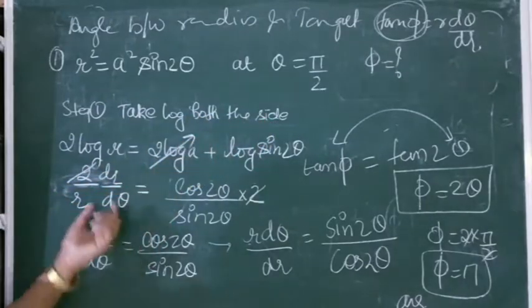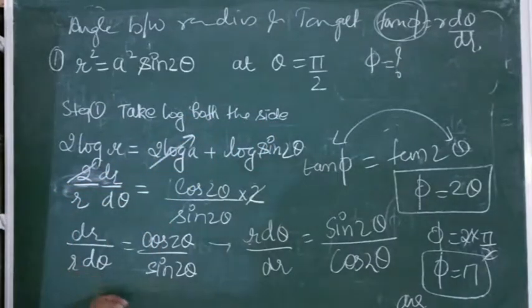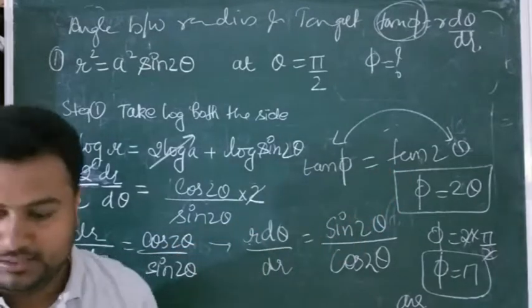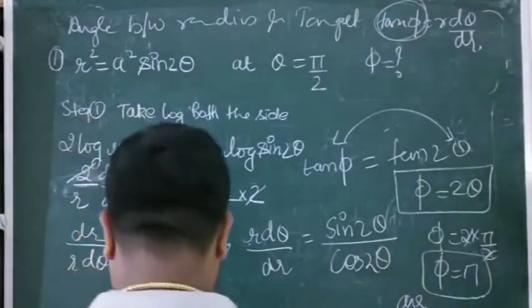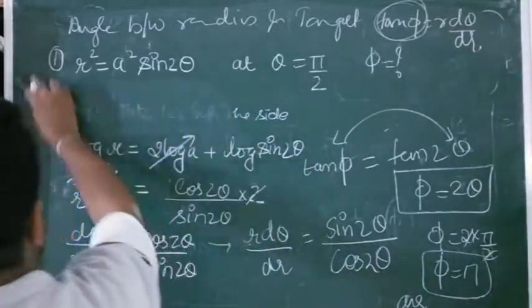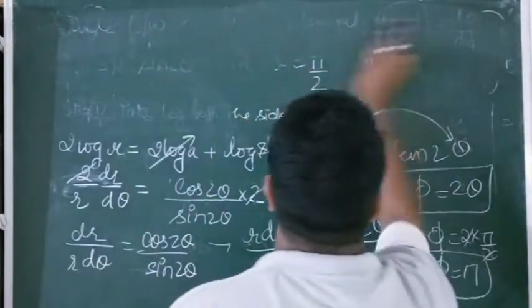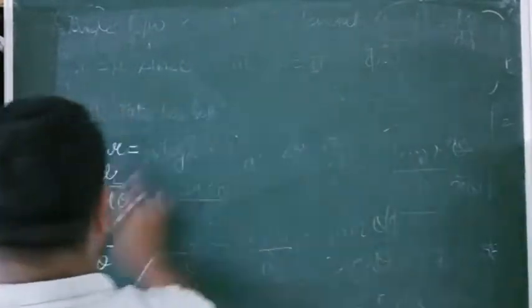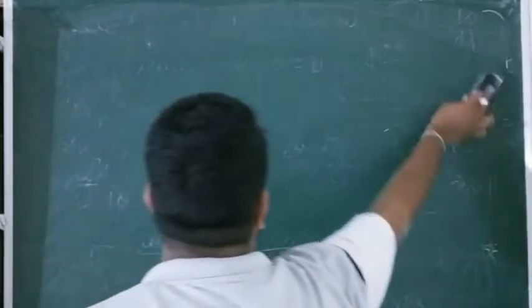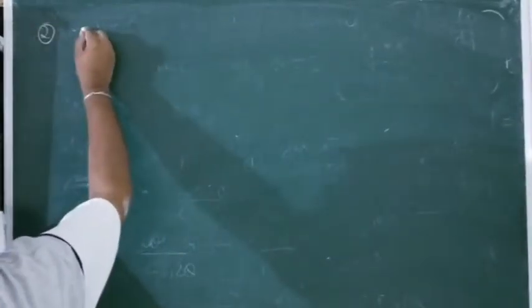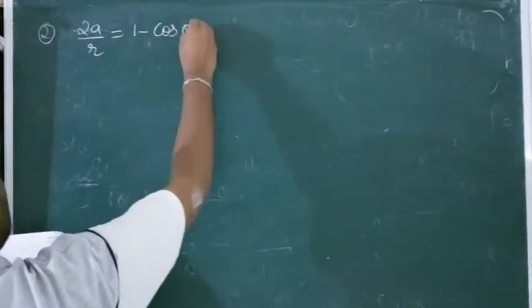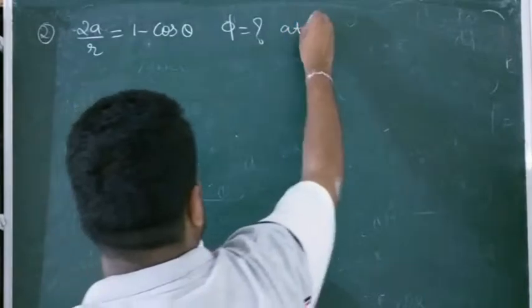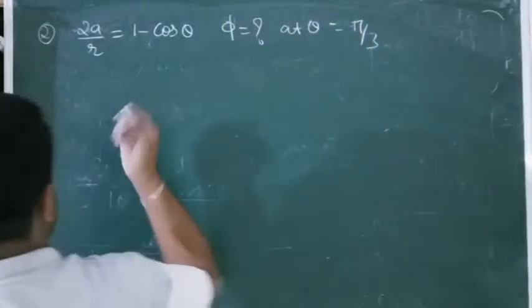Did you get the approach? First take log of both sides, get this equation, reciprocal it, get tan φ, and solve. Let's do one more question. The second question is: 2a/r = 1 - cosθ. We need to find φ at θ = π/3.